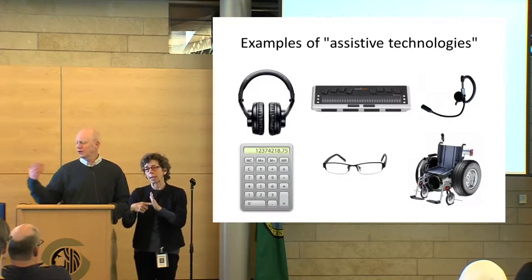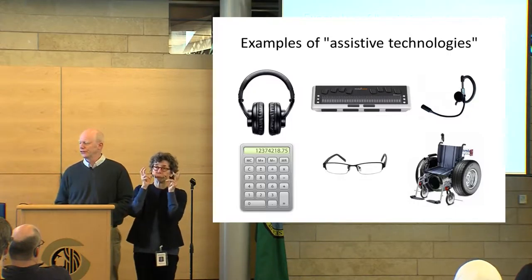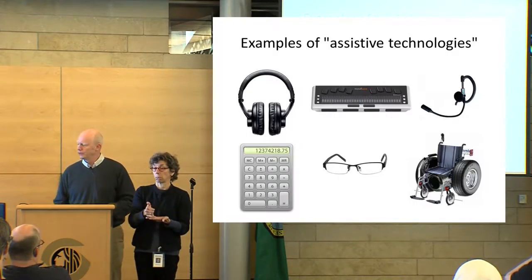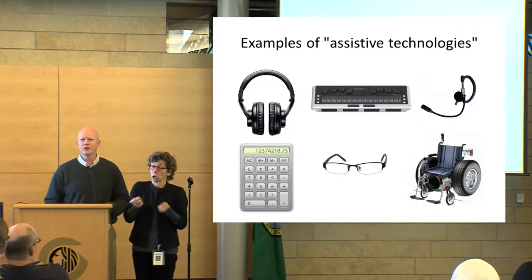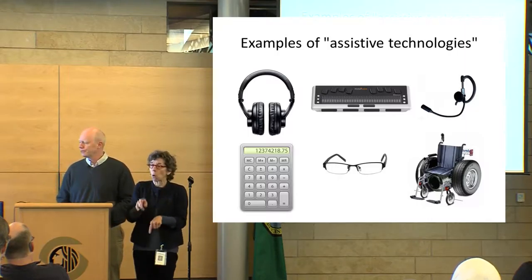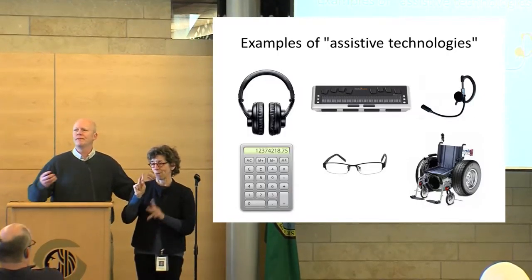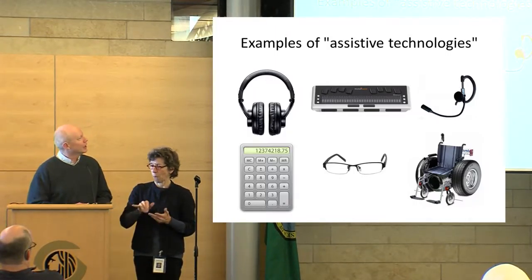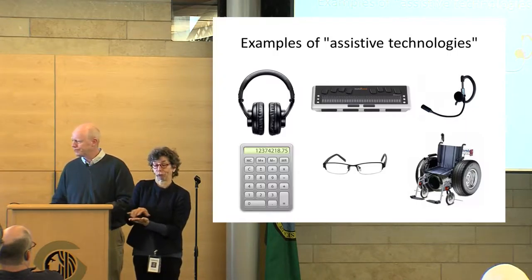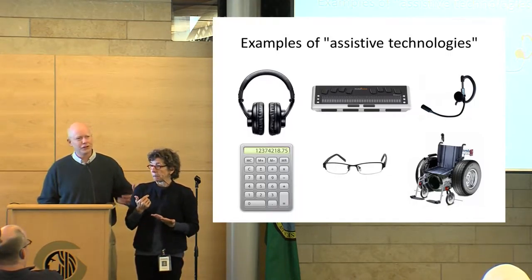A lot of people use assistive technologies to accommodate their disability. Headphones, for example, represent listening to content — if you can't see the screen, a screen reader makes that possible. A refreshable braille device enables that communication. Speech recognition lets someone who can't use a keyboard or mouse control the computer with voice alone. A calculator is an assistive technology for someone who can't perform complex mathematical calculations in their head — most people can't. Eyeglasses are an assistive technology that corrects vision to help people see better.